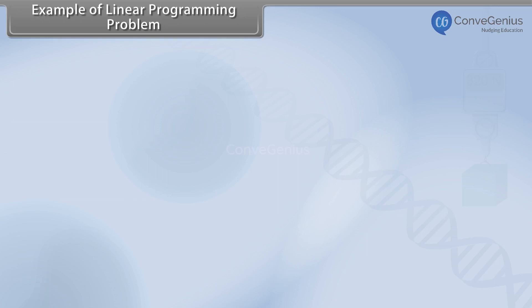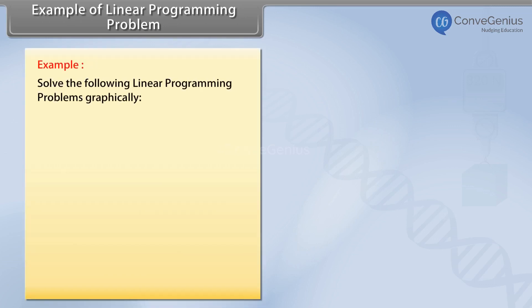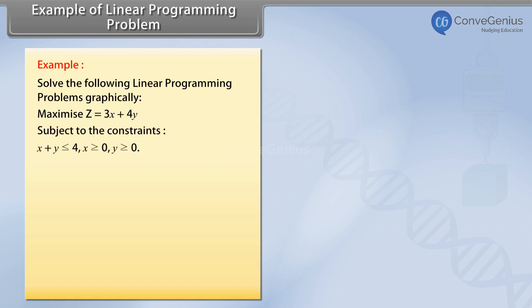Example of Linear Programming Problem. Solve the following linear programming problems graphically. Maximize Z equals 3X plus 4Y, subject to the constraints: X plus Y is less than or equal to 4, X greater than or equal to 0, Y greater than or equal to 0.